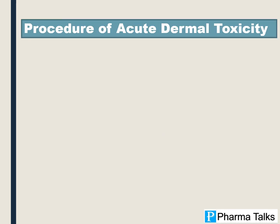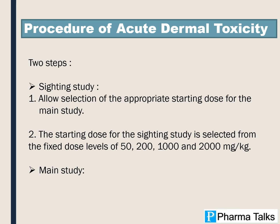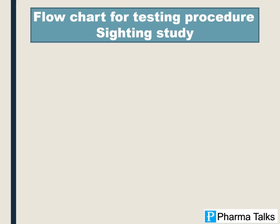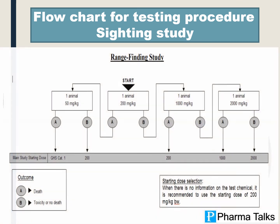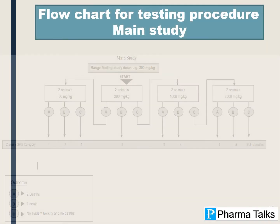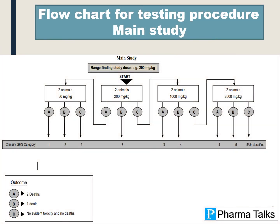Procedure — 2-Step Sighting Study: allows selection of the appropriate starting dose for the main study. The starting dose for the sighting study is selected from the fixed dose levels of 50, 200, and 1000 mg per kg. A flowchart for the testing procedure covers both the Sighting Study and the Main Study.